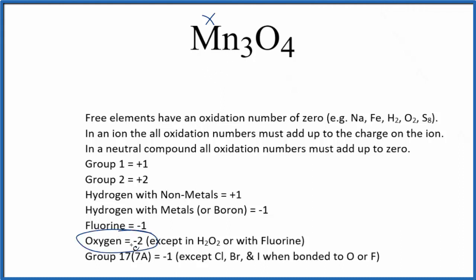Oxygen, that's almost always going to be negative two, except in compounds like peroxides or when it's bonded to fluorine. Here it's bonded to the manganese, so that's going to be negative two for each oxygen.